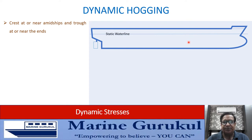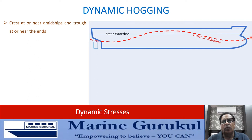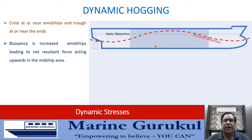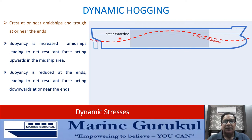In the case of dynamic hogging, let's visualize a scenario where the crest of the wave is located at or near the midship region and the trough at the ends. Here is the ship with its static waterline. As the wave passes with the crest near midship, this is the dynamic waterline, because it keeps changing as waves go past the ship's hull. This results in a greater underwater volume in the midship region compared to the static waterline, meaning increased buoyancy amidships.